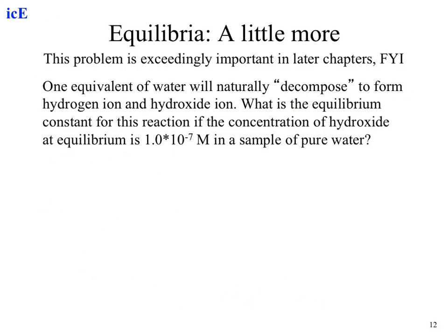This question is going to become important when we move into the next chapter. I adjusted this example question to reflect a little bit better what you would expect to balance for your equations. One equivalent of water will naturally decompose to form hydrogen ion and hydroxide ion. What does that mean? That means I take one molecule of H2O. Why do I only take one? Because it says one equivalent. Decomposes to form hydrogen ion, known as H plus, and OH minus.